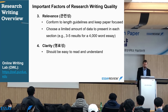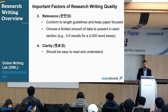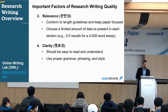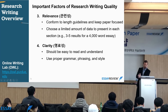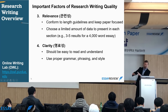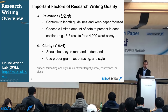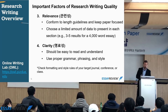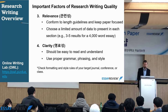This is a golden rule for all rules: check the formatting and style rules of your target journal. If you're applying to a journal like Bioscience Monthly, read everything in the 'for authors' section, and read as many articles as possible to get a sense of what their articles look like.